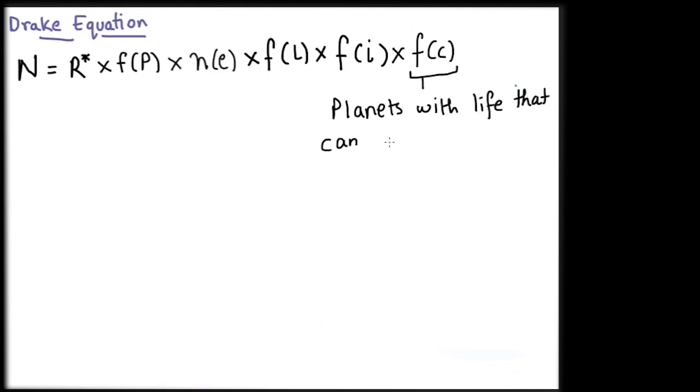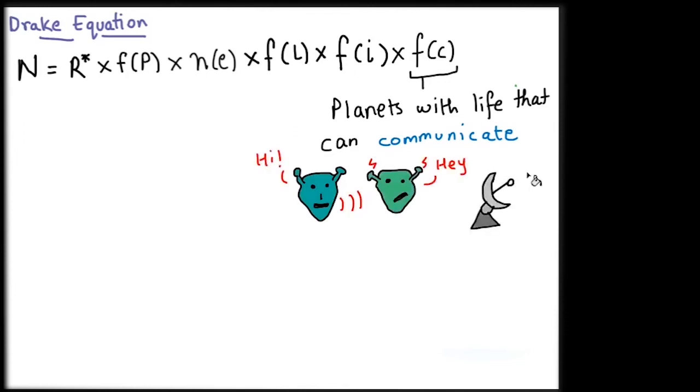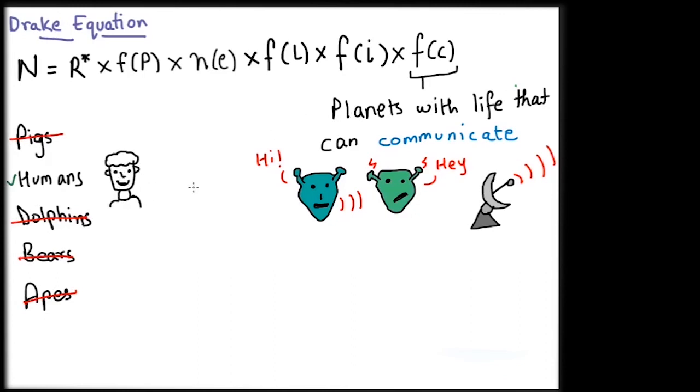The sixth term F of C is the fraction of planets with intelligent life, where this life form can also communicate with each other and outer space. Of all the intelligent species on earth, only humans have such wide range of communications, languages and have also achieved space communication.